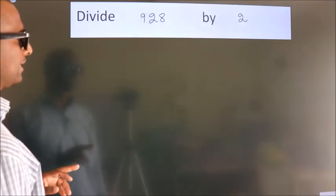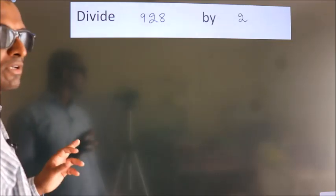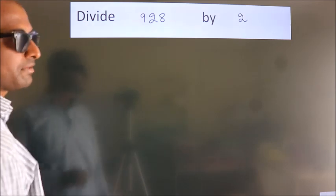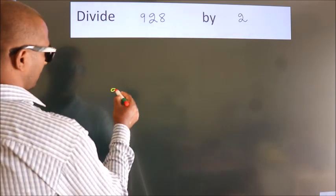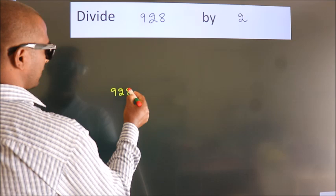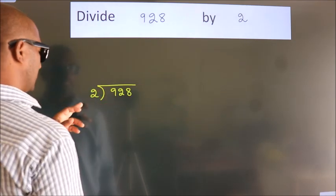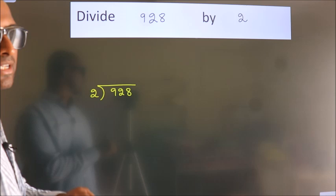Divide 928 by 2. To do this division, we should frame it in this way. 928 here, 2 here. This is your step 1.